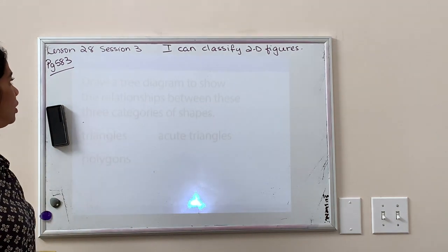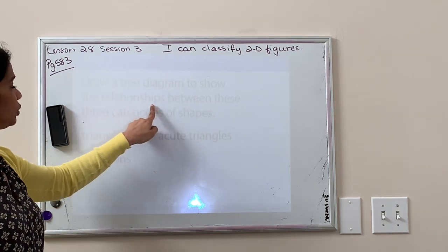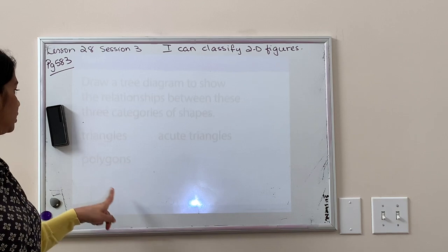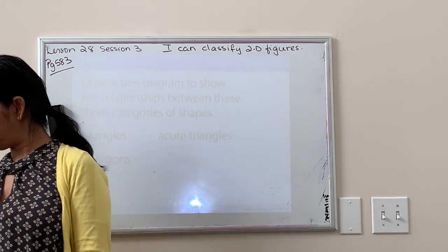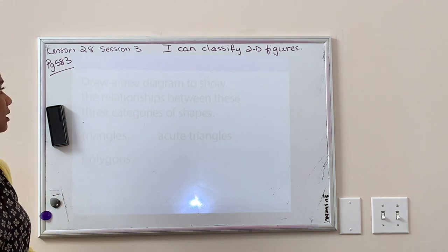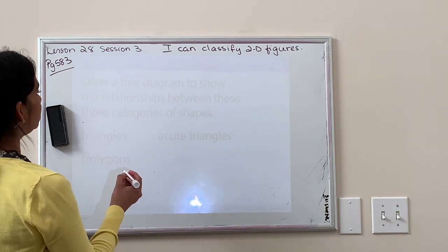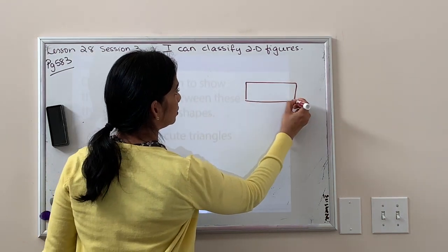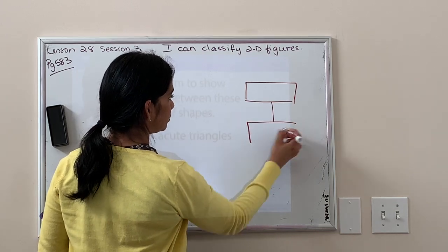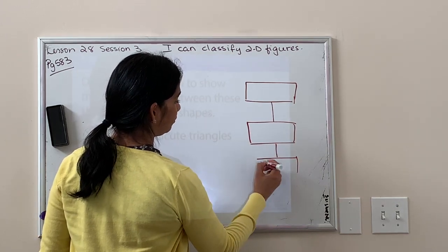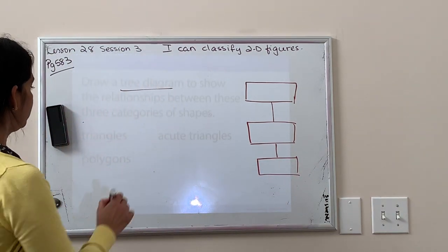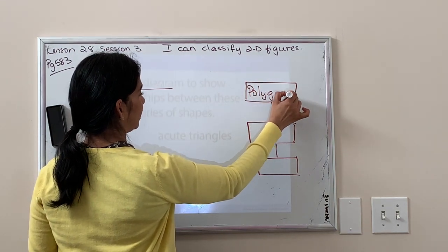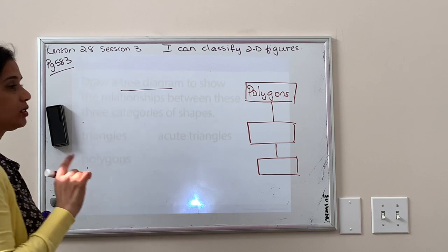I want you to try this one. Draw a tree diagram to show the relationships between these three categories of shapes: triangles, acute triangles, and polygons. To do a tree diagram, because we did this in the last lesson, what is the most general of these shapes? The most general shape is a polygon. So I'm going to put polygon up here.